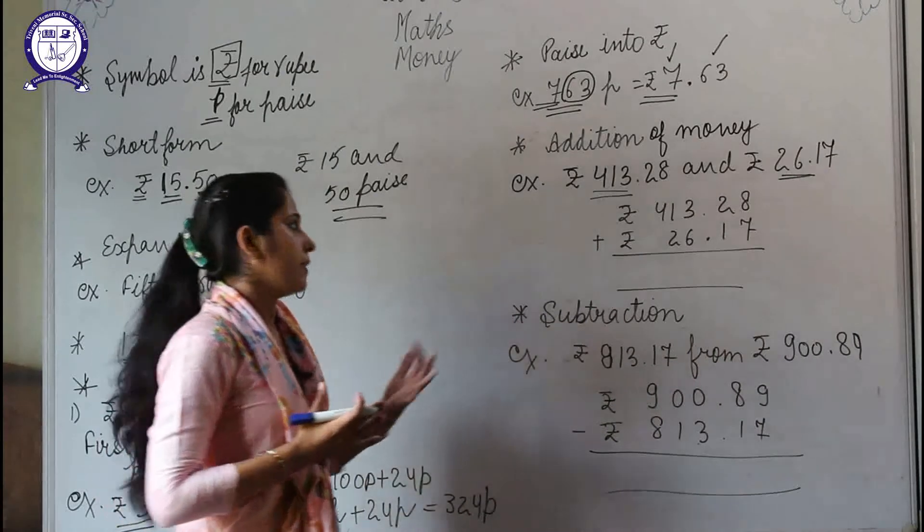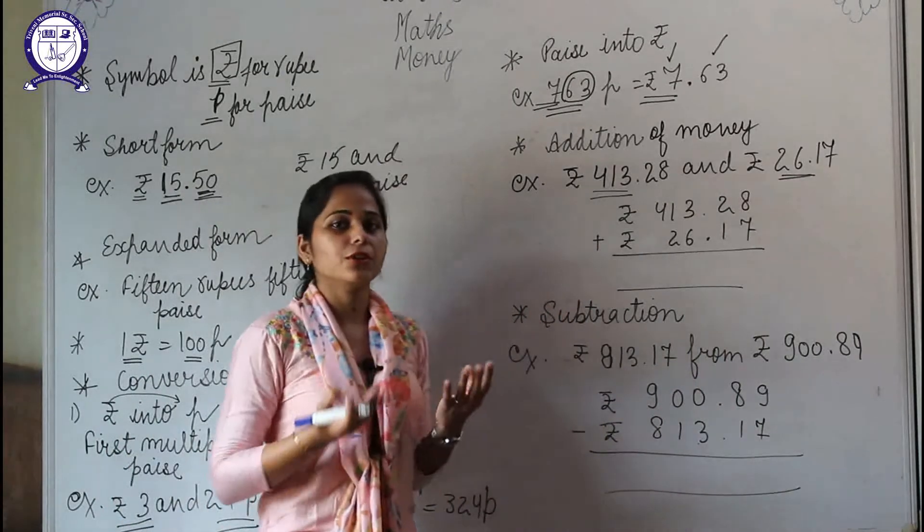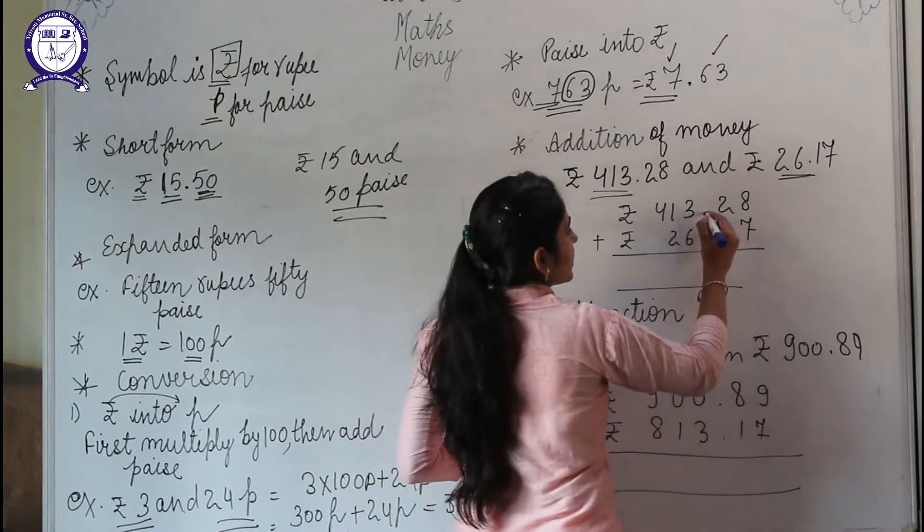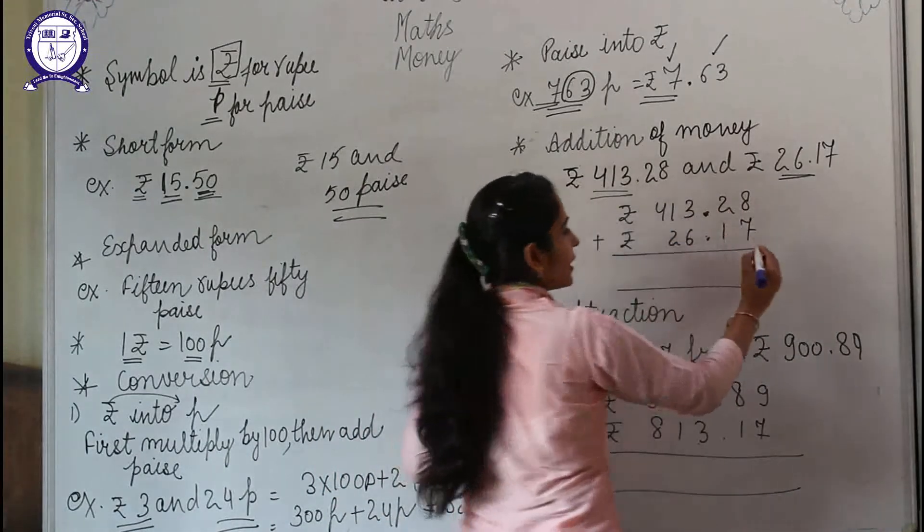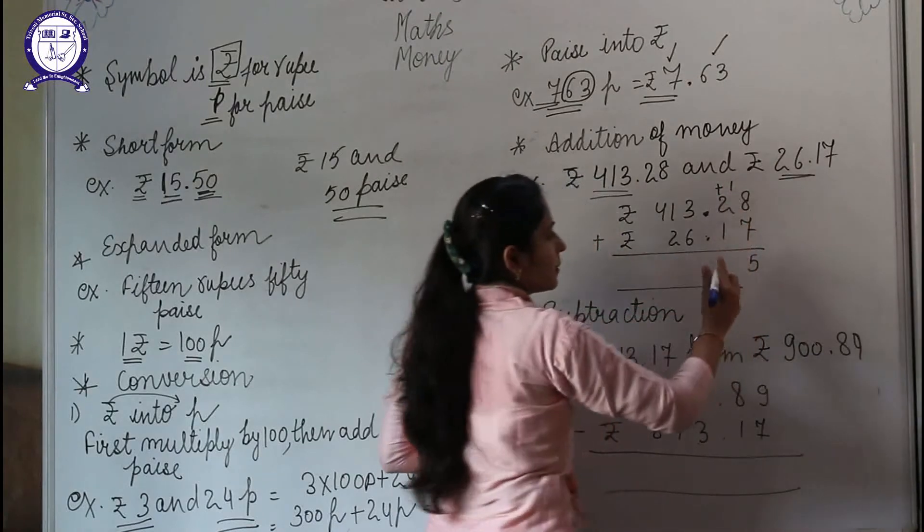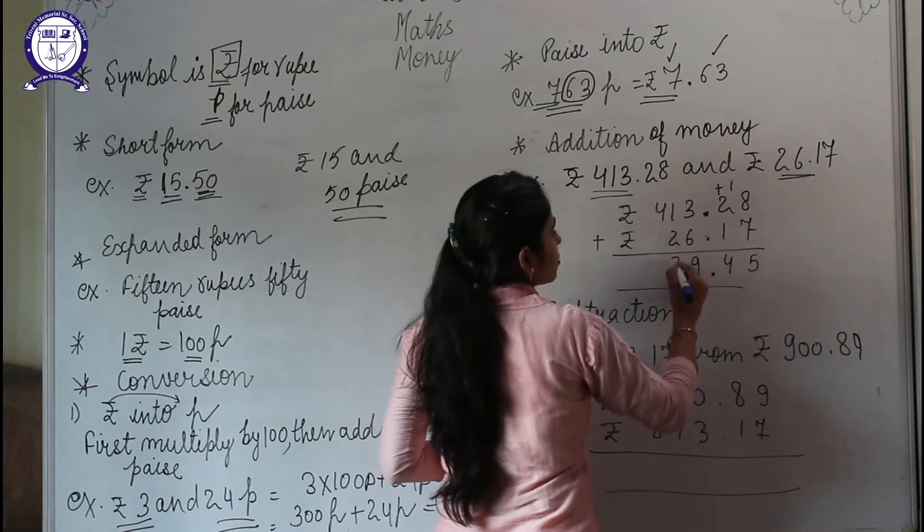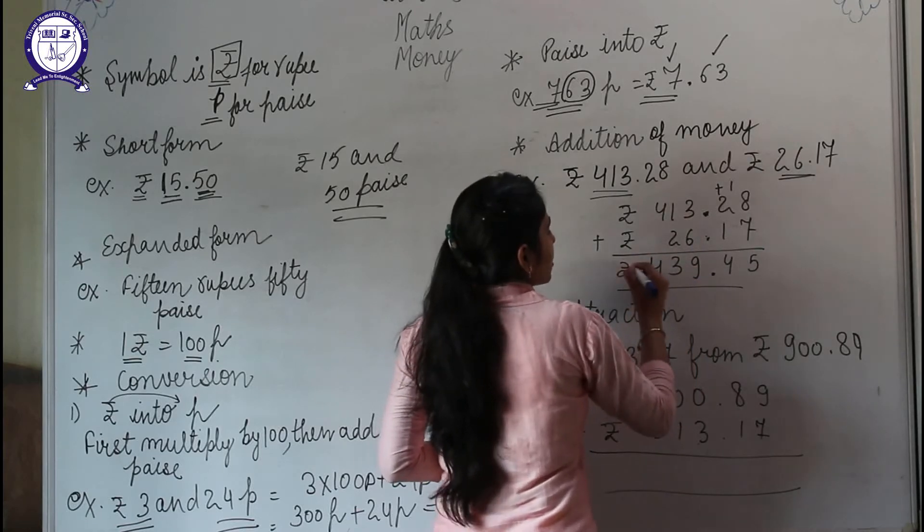and 17 paise. Suppose you buy a thing that costs this money and a second thing that costs this money. You need to pay the amount to the shopkeeper, so you will start adding the numbers. You will place the numbers like this: 8 plus 7 is 15, carry 1. 1 plus 2 is 3, 3 plus 1 is 4, point, 3 plus 6 is 9, 1 plus 2 is 3, 4 as it is. So the total bill